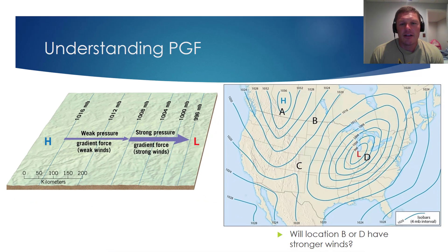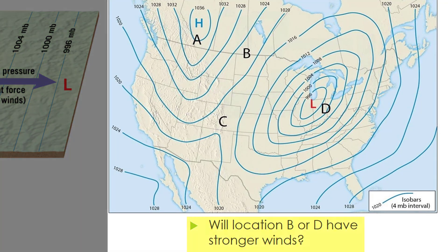Looking at the map on the right side of this slide: will location B or D have stronger winds? The answer is location D. Generally, winds are stronger near lows than near highs. The isobars are spaced very closely near location D, while at location B the isobars are spaced much wider apart. Wide spacing means a weak pressure gradient force; narrow spacing means a strong pressure gradient force.